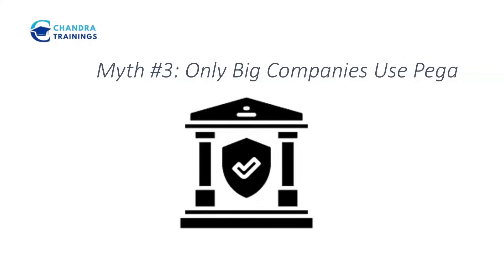Myth number three: only large enterprises use Pega. When Pega started its journey, it was very strong in banking, financial and telecom sectors. But today even mid-sized companies use it for customer servicing, employee onboarding and workflow automation. In fact, some startup companies use Pega Cloud for their digital process automation. It's no more limited to big enterprises anymore.